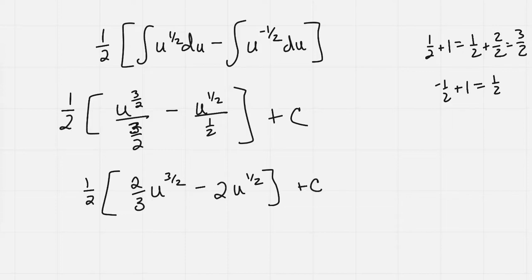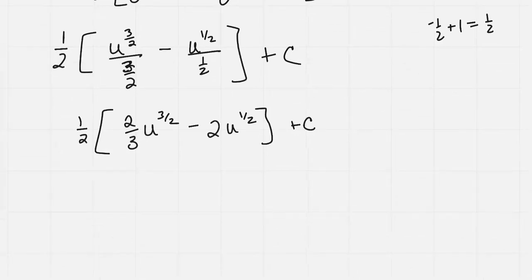And let's bring the substitution back in and multiply a few things through. So I have 1 half times 2 thirds would just be 1 third. The u was 1 plus x squared, and that's all to the 3 halves, minus 1 plus x squared to the 1 half, and all of that plus c.